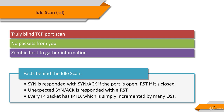Every IP packet on the Internet has a fragment identification number, the IPID. Since many operating systems simply increment this number for each packet they send, probing for the IPID can tell an attacker how many packets have been sent since the last probe.